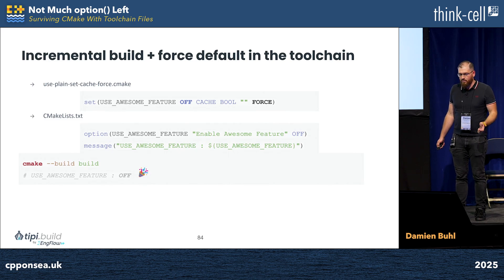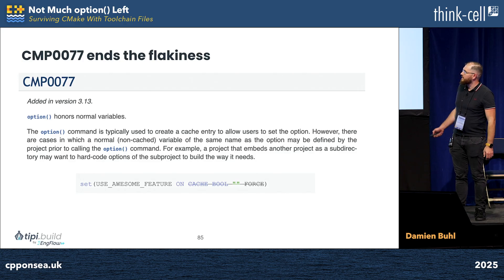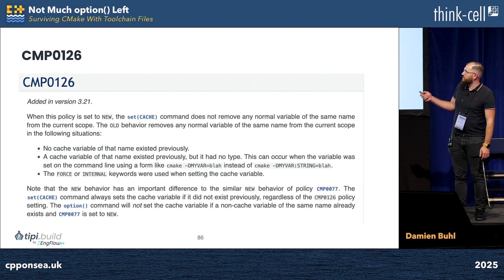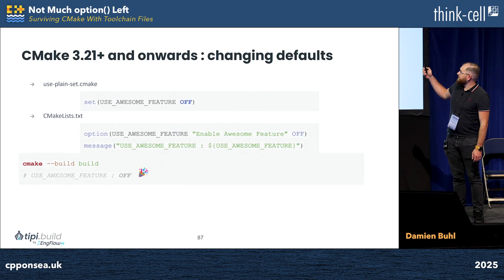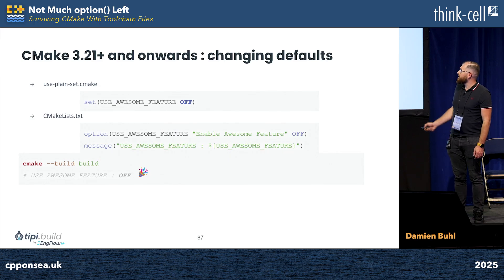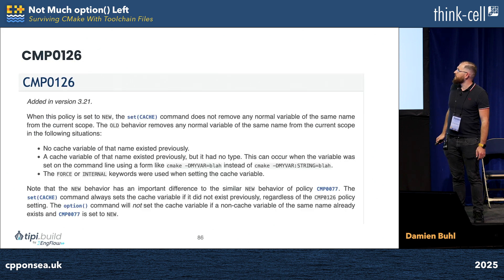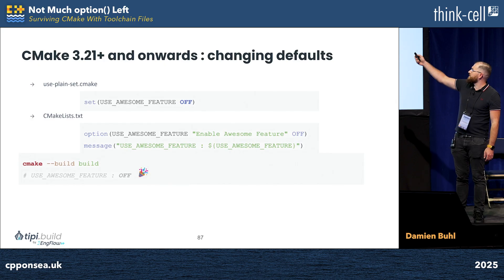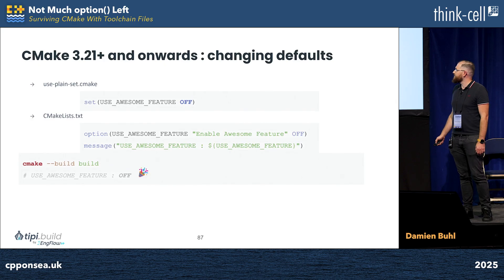That's what I've been using for a while, and it's governed by changes in CMP0077 in CMake 3.13 and also CMP0126 in 3.21. They're very interesting reads and generally create a lot of headaches. When they change the default, you don't need to use CACHE FORCE anymore, because as you can see, option now honors normal variables. So they fixed it — I can set my variable in my toolchain file and it will be OFF. Everything seems solved!